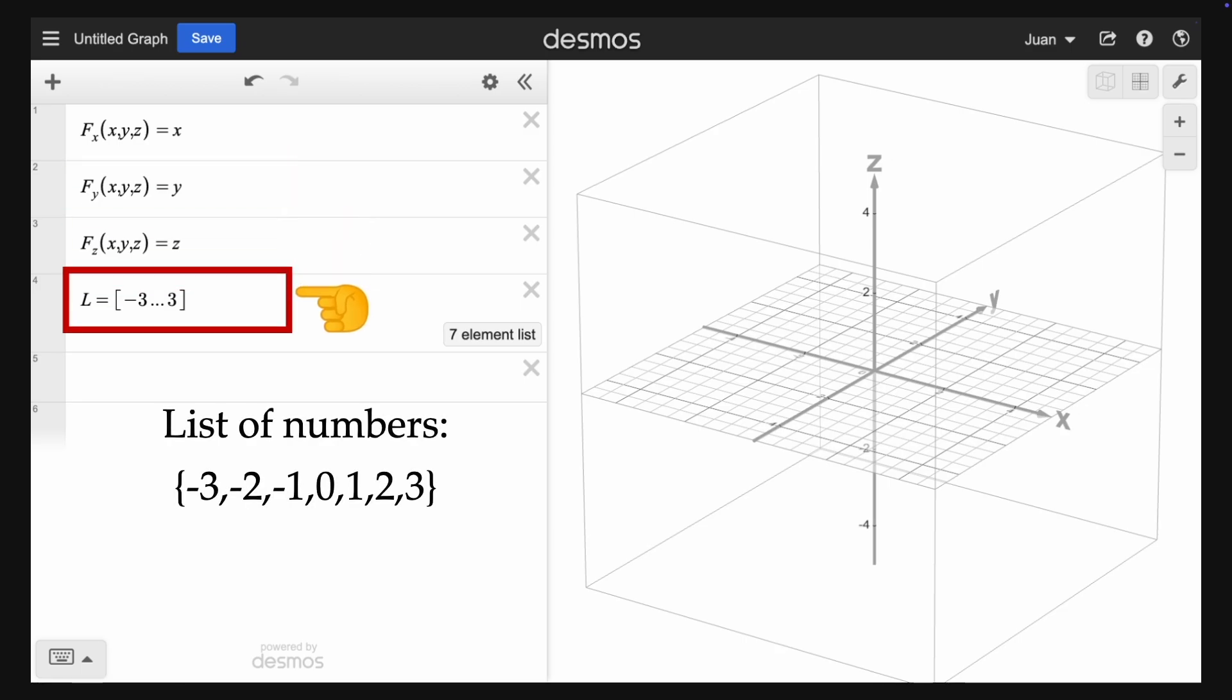In the input box, we type each one of the components of the vector field. Now we create a list. In Desmos, the syntax to create a list is a little bit different. Here we type square brackets minus 3 dot dot dot 3 close brackets. This creates a list of numbers from minus 3 to 3 with an increment of 1.